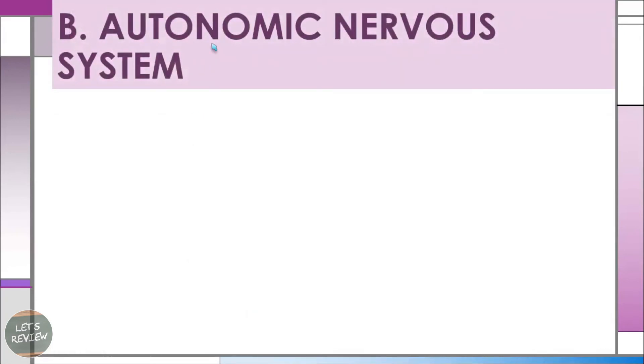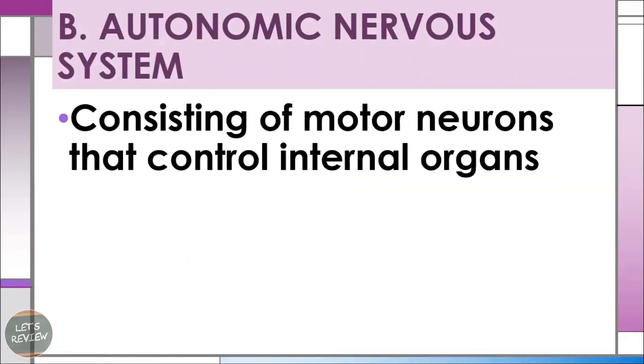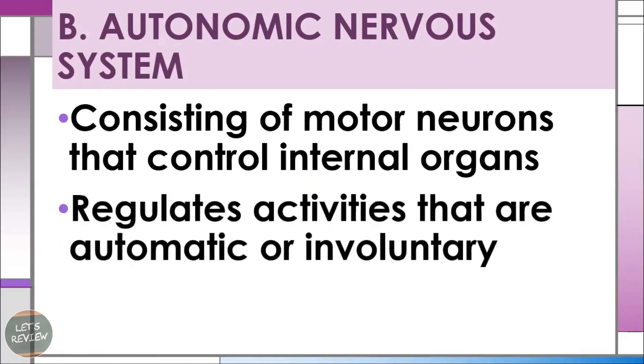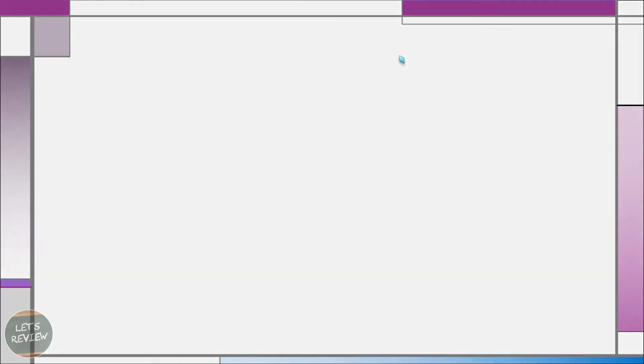The second part is the autonomic nervous system. It consists of motor neurons that control internal organs and regulates activities that are automatic or involuntary — not under your conscious control. Those are the key learnings you need to review about the nervous system. Thank you very much for listening.